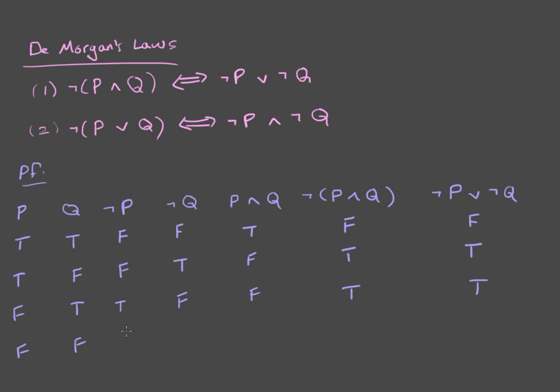In this last line, if both of these are false, then their negations are going to be true. The AND statement is definitely going to be false. And the negation of it will be true. And if both of the negations are true, then the OR statement will be true.